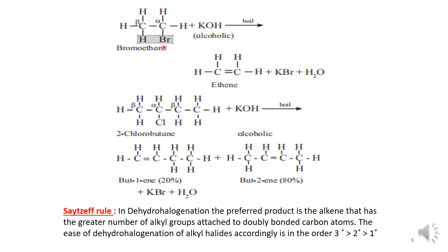In this reaction, we have taken bromoethane. On the alpha carbon atom, bromine is present, and on the beta carbon atom, hydrogen is present. When the compound is heated in the presence of alcoholic KOH, the potassium takes up the bromine to give KBr, and the OH group takes up the hydrogen to give H₂O. Rearrangement then occurs between the two carbon atoms to give a double bond, forming the ethene molecule.